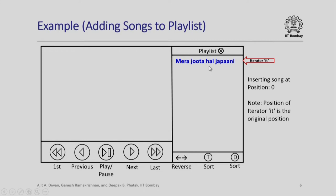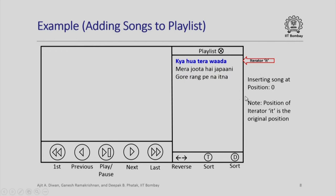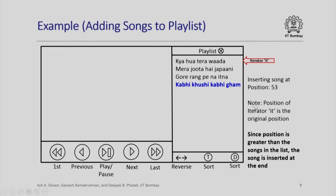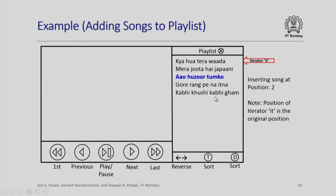I want to insert a song at position 0. Note that the iterator 'it' is at the original position. Next, I insert a song at position 1 — the iterator 'it' is still at the original position. Then I insert a song at position 0, so 'Kya Hua Tera Vada' is now inserted there. I want to insert a song at position 53 — since there is no position 53 because there are fewer songs, the song is inserted at the end. Next, I insert a song at position 2, noting that position is counted from 0 with respect to the original position.